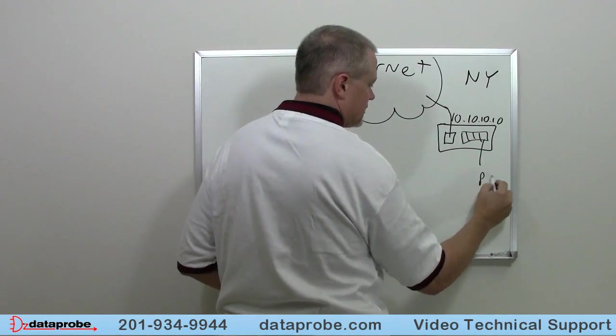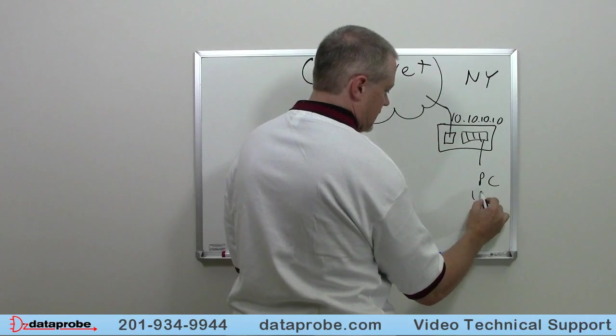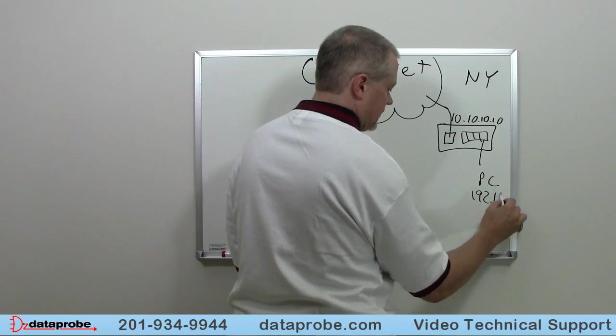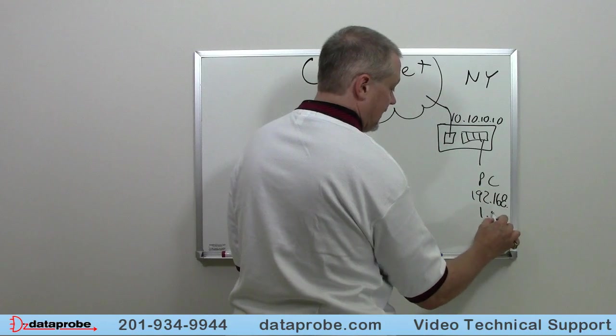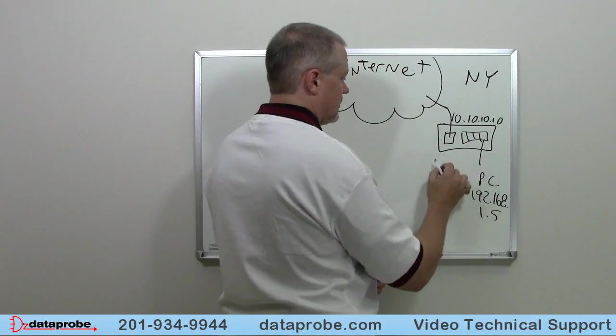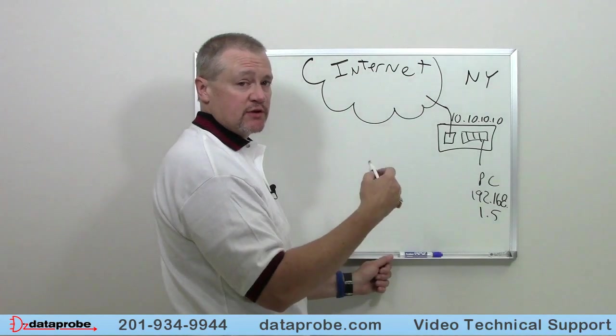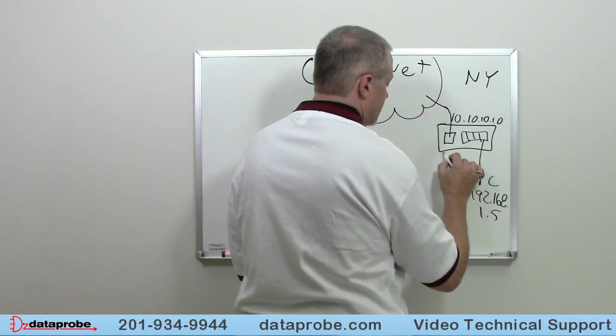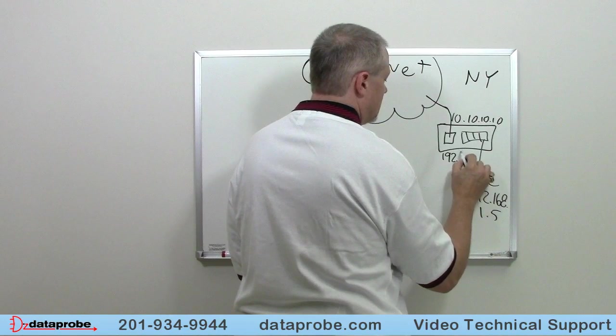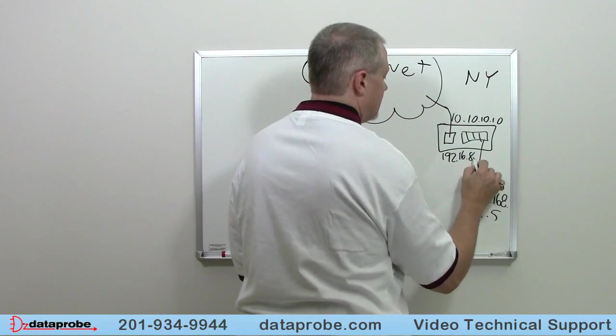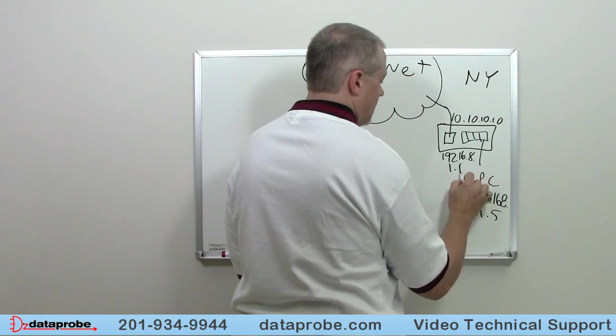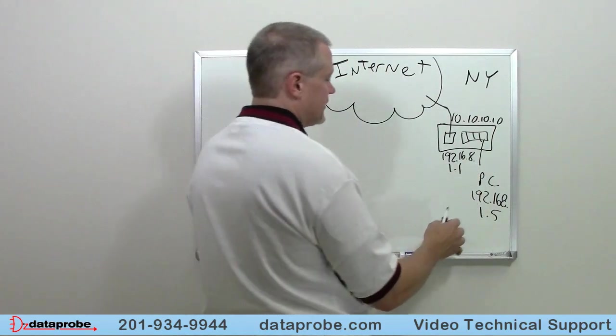We'll put a PC over here and we'll say that's 192.168.1.5, for example. The router is going to have its own local address, which is going to be the gateway. In this case we are going to call it 192.168.1.1. If you notice, everything is going to be .1 network over on this side.